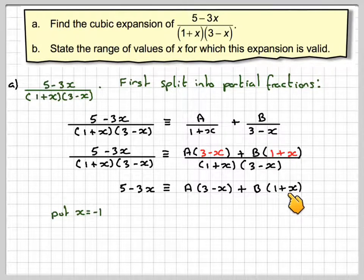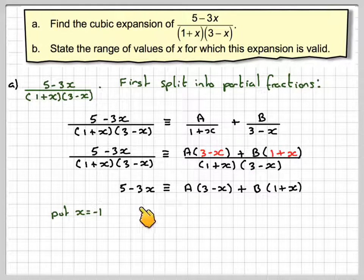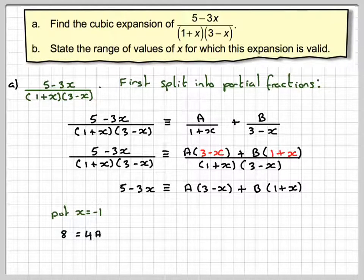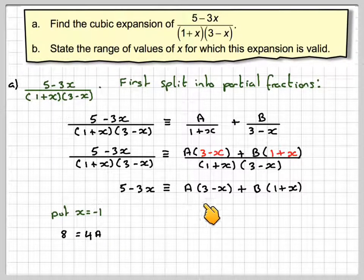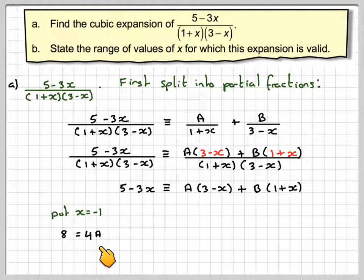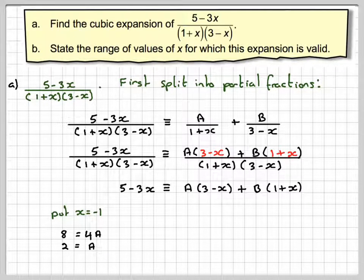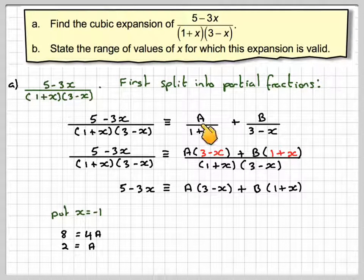Putting x equal to minus 1 will make that 0. We're going to have 3 minus 3 times minus 1 which is 3 plus 8. 5 plus 3 which is 8. Here we're going to have 3 minus minus 1 which is giving me 4. Therefore, a is equal to 2. So we'll put 2 in here.